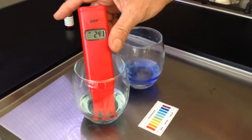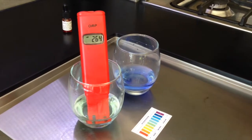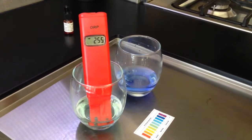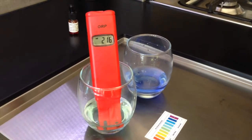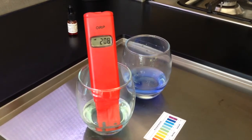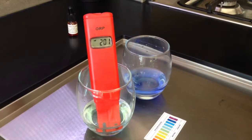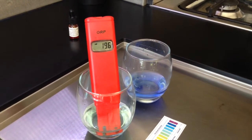When we put the ORP meter in the tap water, you'll see it starts going positive. When the ORP is positive, it means it's not an antioxidant, it's an oxidant. It's actually contributing to the acidifying effect within your body.